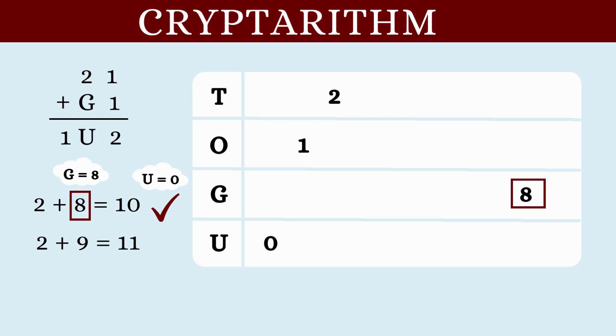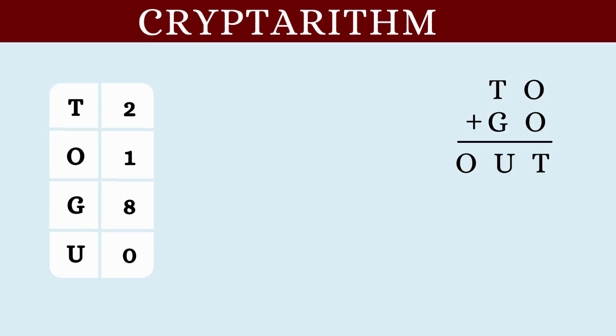And that means G is equal to 8. So as our final answer, we have T is equal to 2, O is equal to 1, G is equal to 8 and U is equal to 0. Let us substitute these values in our puzzle and verify to be assured that our solution is correct.